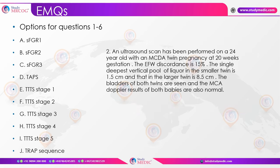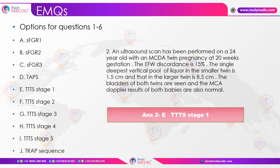EMQ case 2: A 24-year-old with MCDA twins at 20 weeks has EFW discordance of 15% — not sFGR. Single DVP in the smaller twin is less than 2 cm and in the larger twin more than 8 cm. Bladders of both twins are visible, and MCA Doppler results are normal. This qualifies as TTTS Stage 1, since the bladder is visible and Doppler results are normal.